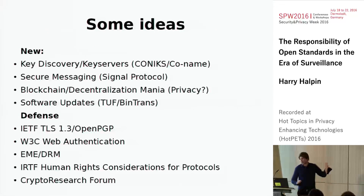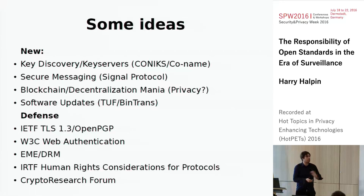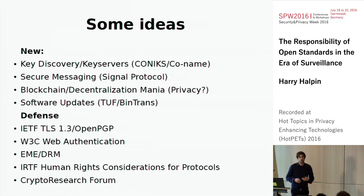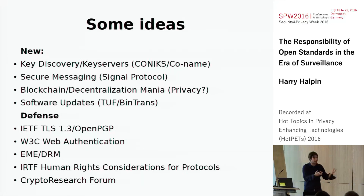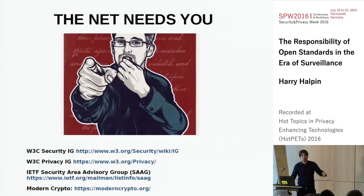There is so much to standardize: key discovery, secure messaging, blockchain, software updates — and many new areas. But we also desperately need people to help defend existing standards: TLS 1.3, OpenPGP, Web Authentication, DRM, and human rights considerations. We don't have enough independent, neutral academics — particularly those advocating for human rights — working in these areas.